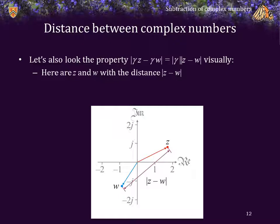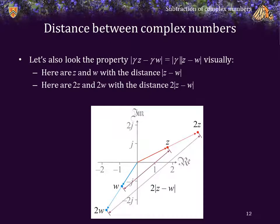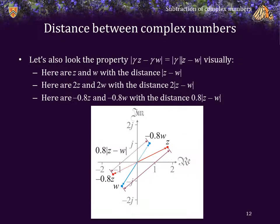Let's look at that last property visually. That is, if we scale both z and w by a real number γ, then the distance between those two scaled complex numbers is just the absolute value of γ times the distance between z and w. So here we see z and w and the distance between them. If we multiply both or scale both z and w by 2, then the distance between those two new points is now twice the original distance. Similarly, if we multiply each of z and w by negative 0.8, then the distance between those new two points is again 0.8 times the original distance.